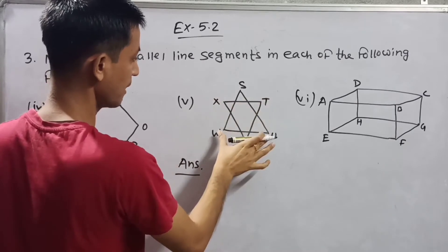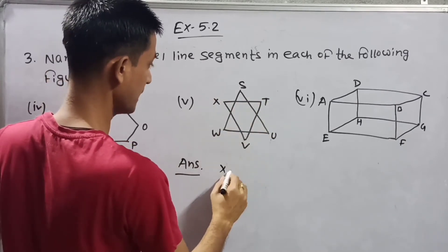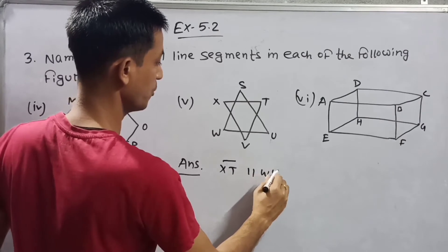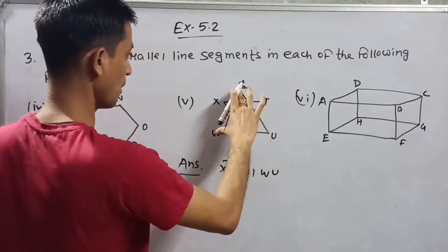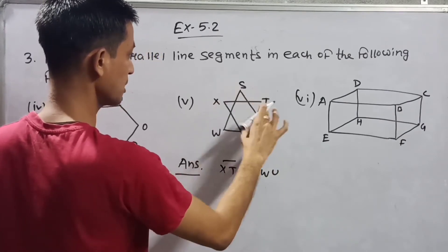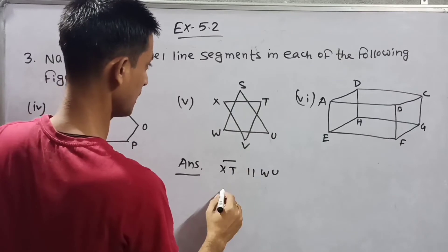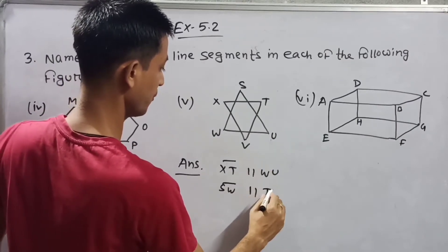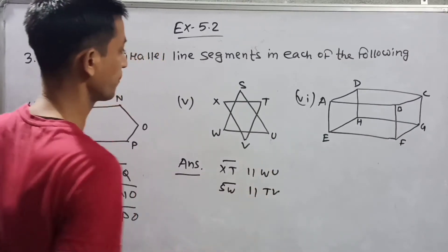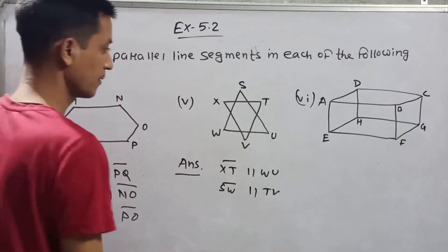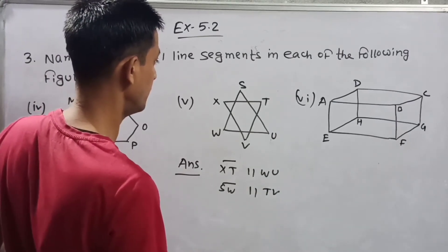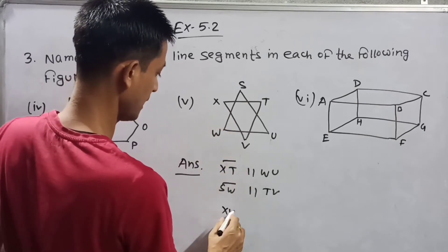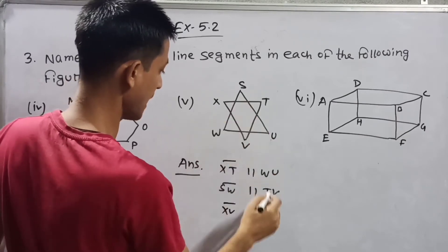For the next figure with two triangles: XT is parallel to WU. Now SW is parallel to TV. And XV is parallel to SU.